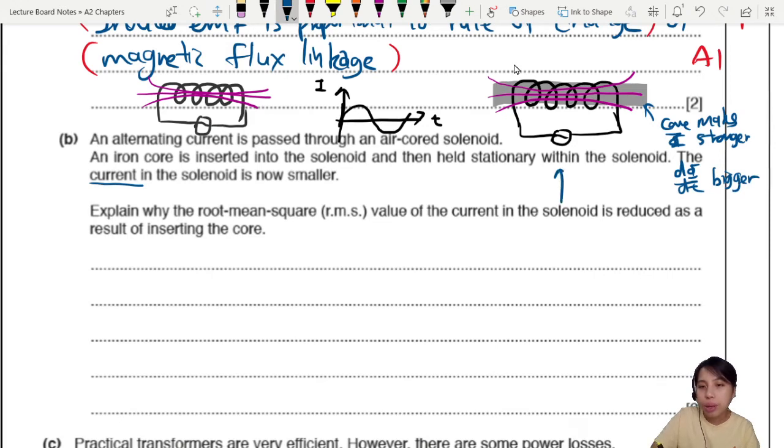that means your graph is going to look very different. Because now your d phi dt is bigger. Previously, maybe your flux graph is like this. Flux, flux, flux. Suddenly you put the iron core. The flux becomes so powerful. So the rate of change of flux is bigger because of the iron core.